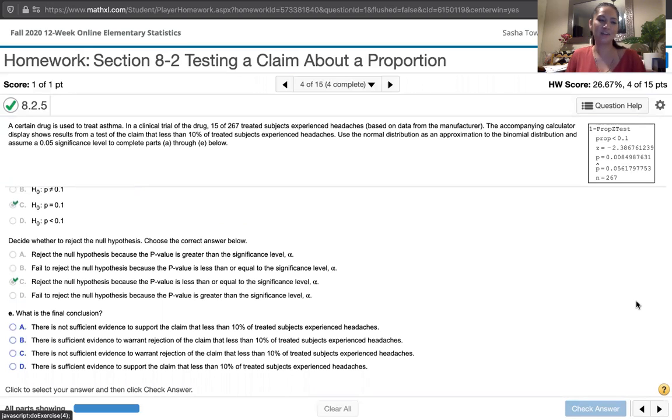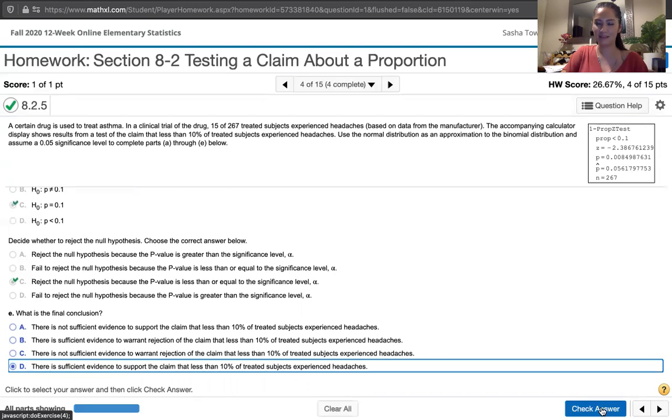And then the last one says, what is your final conclusion? We're rejecting the null hypothesis. And the null hypothesis said that the true population proportion was equal to 0.1. So we're saying the evidence suggests that that population proportion is not equal to 0.1. And that is in support of the claim. So we will say there is sufficient evidence to support the claim that less than 10% of treated subjects experience headaches. So that's answer D.